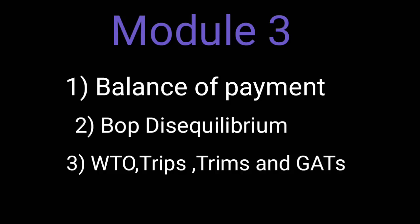Overall for Module 3, the examiner may frame questions on the structure of Balance of Payment, causes of BOP disequilibrium, or measures to correct BOP disequilibrium. Questions on GATT agreements and recent developments in those agreements can also be expected. BOP is the most basic and important topic here — if you study it thoroughly, two separate questions can come from it: one on causes and one on measures for correcting disequilibrium.